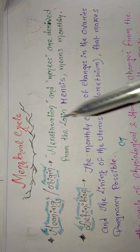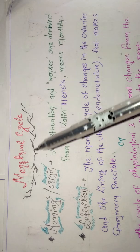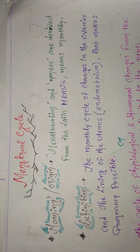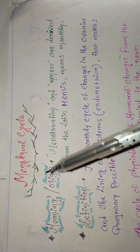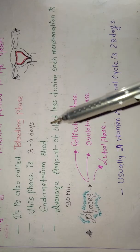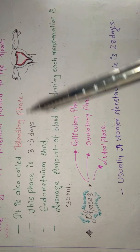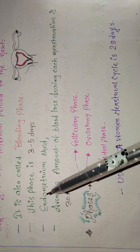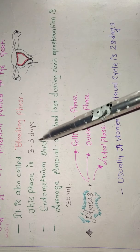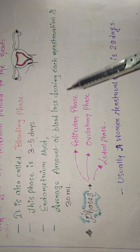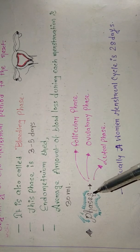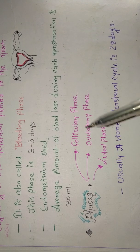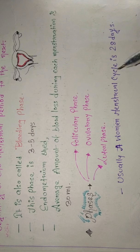Today we continue studying the menstrual cycle. To recap: the menstrual cycle includes a bleeding phase lasting three to five days, during which the endometrium — the innermost layer of the uterus — sheds. The average blood loss during each menstruation is 30 ml. There are three phases: the follicular phase, ovulatory phase, and luteal phase. The menstrual cycle is usually 28 days.